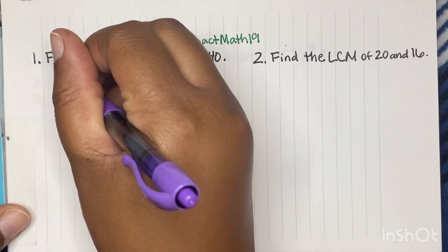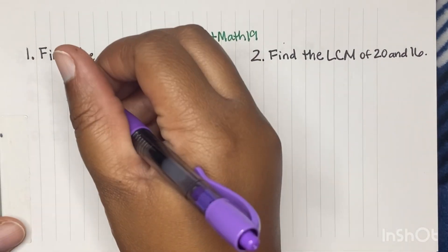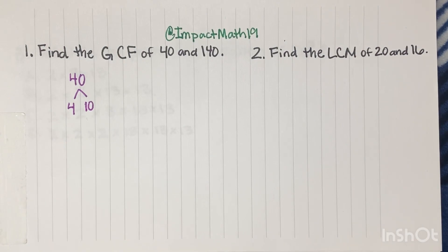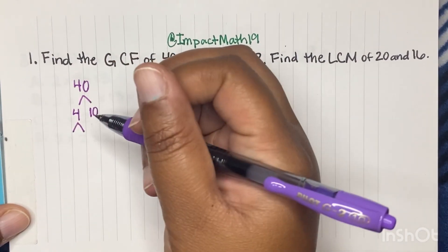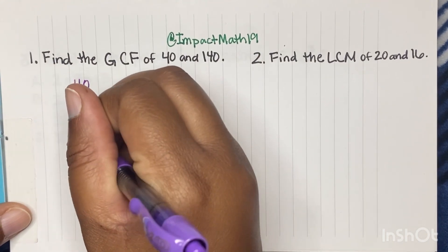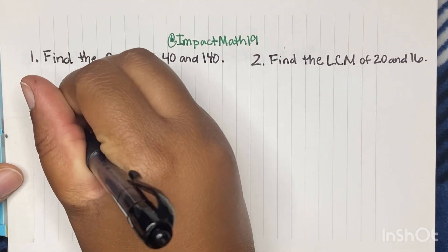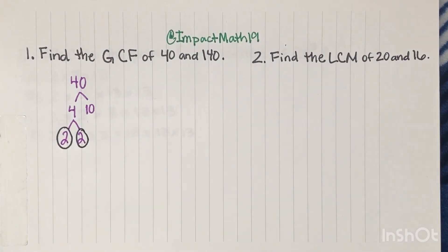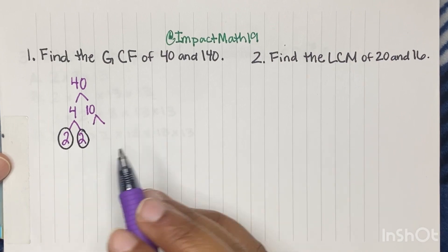So let's start with 40. And let's ask ourselves, what times what gives you 40? Well, 4 times 10 is one way to get 40. And then what times what gives us 4? 2 times 2. We're stopping at 2 because 2 is called a prime.